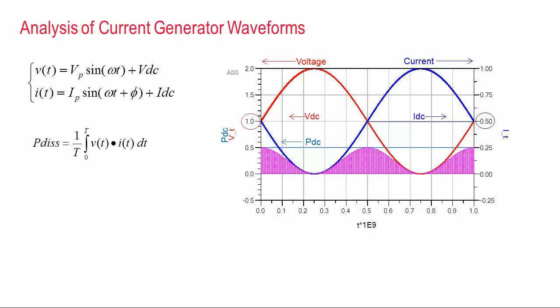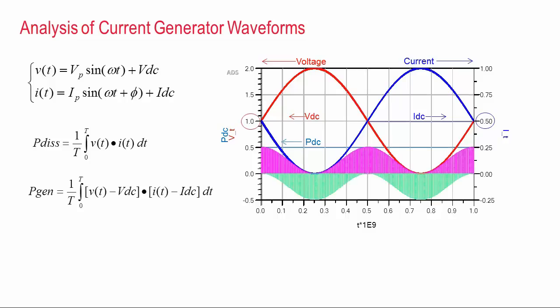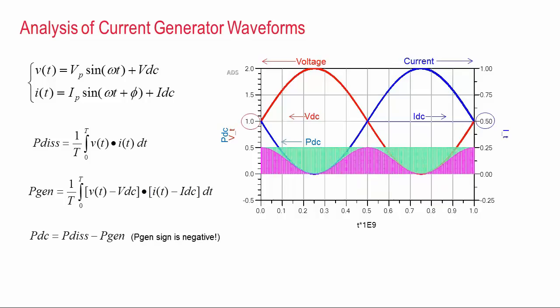Now if we remove the DC offsets from the RF waveforms, it's then easy to calculate the power generated, because we can just multiply the signals together and the result should be negative. Now since energy is conserved, it also shouldn't be surprising that the area of the dissipated power, combined with the area of the generated power, is exactly equal to the DC power put in by the supply.